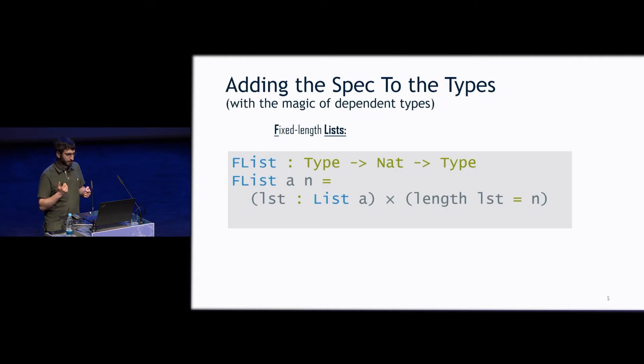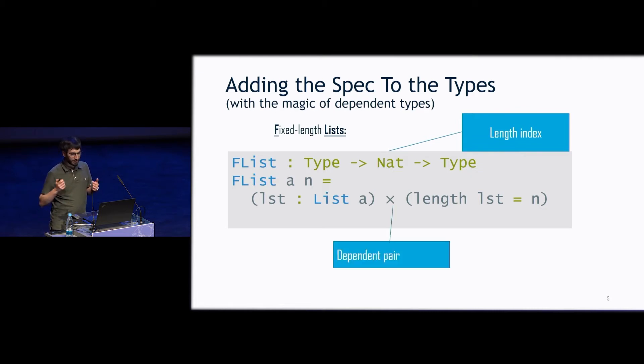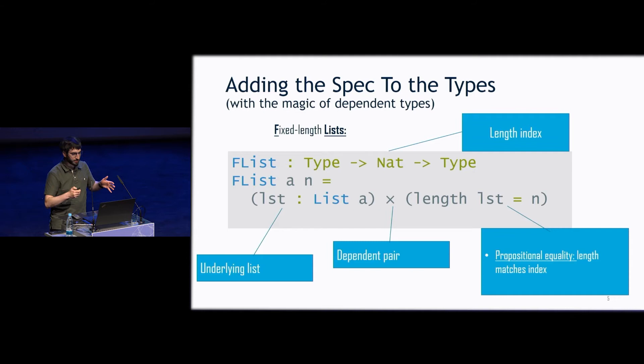So, the way we're going to do this is with fixed-length lists. Here, a fixed-length list is indexed by a number, so that's the dependent part of dependent types. The type depends on the number. And it's going to be a dependent pair between a list, so just a regular underlying list, accompanied by a proof that the length of that list actually matches the index that we have in our type.